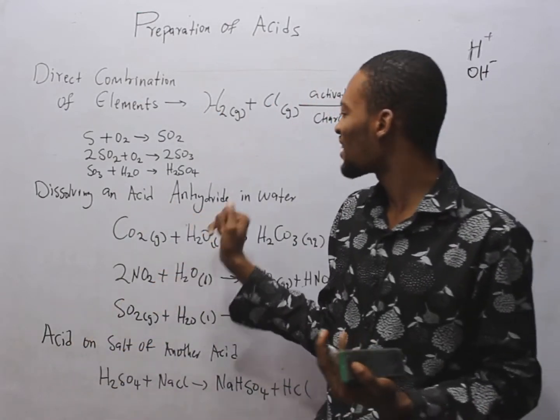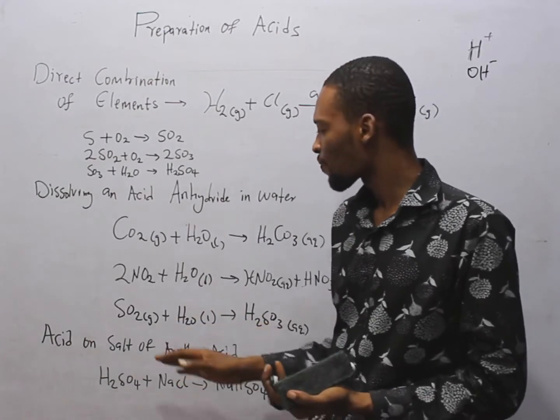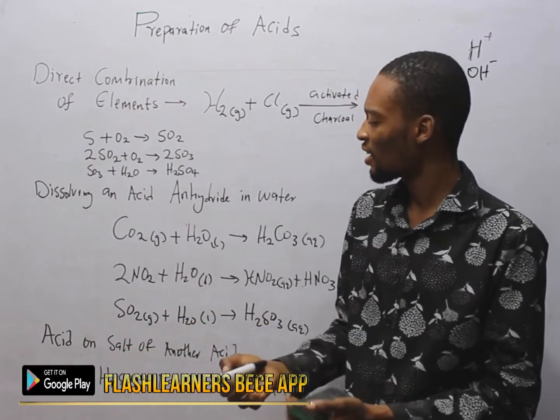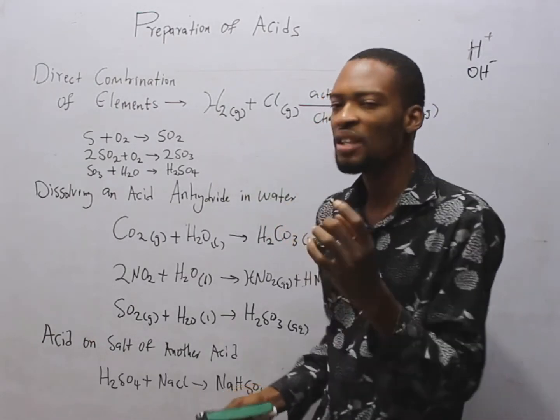Two, by dissolving an acid anhydride in water. And three, the action of acid on salt of another acid. Let's begin with direct combination of elements.